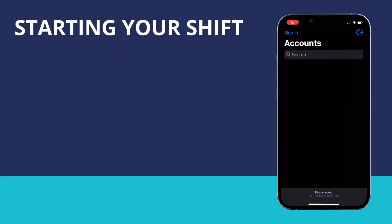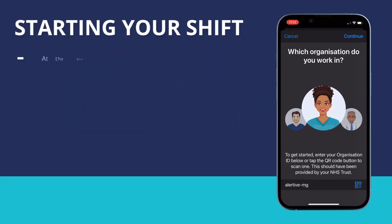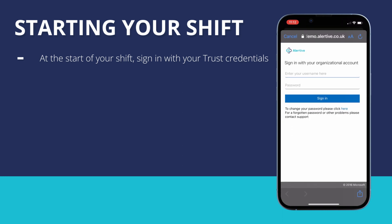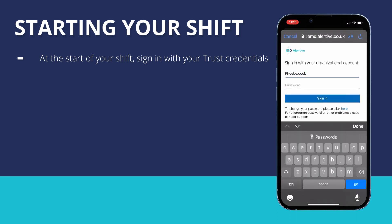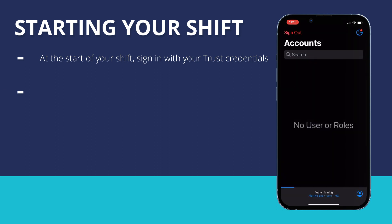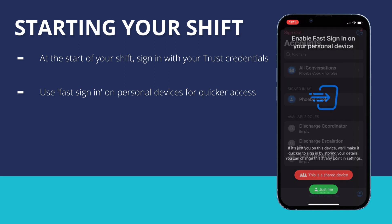When you start your shift, you will need to sign in to the Alertive system using your trust credentials. If you are using a personal device, or a device only you have access to, then you can enable fast sign-in to get in and out of the application using your PIN or biometrics.